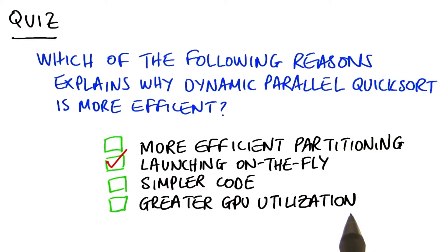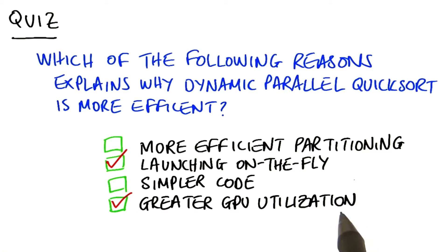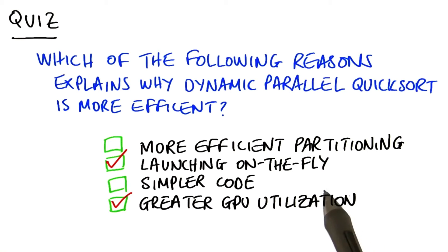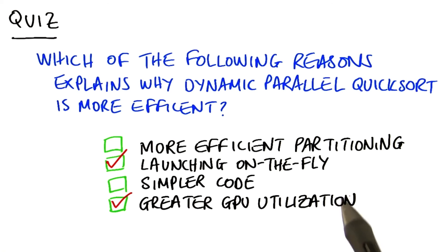And finally, greater GPU utilization is probably the cause for the greatest of speedups. By launching on the fly, I'm making sure my GPU is always busy — so when one partial sort finishes, it creates two more immediately, keeping my GPU fully stacked up and busy with work. It streams more work through my GPU at one time, and my sort ends up faster end to end. In fact, when I've written this program in dynamic parallel form and in host-launched form, I see a pretty much exactly factor 2 speedup between the two.